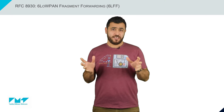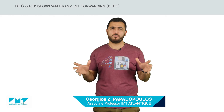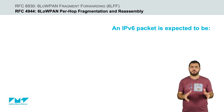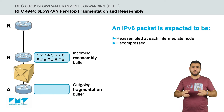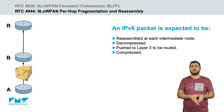Hi, I am Georgios Papadopoulos and welcome to this video on 6LoWPAN Fragment Forwarding. So far, you have seen the original 6LoWPAN per-hop Fragmentation and Reassembly Mechanism, defined in RFC 4944, where an IPv6 packet is expected to be reassembled at each intermediate node, decompressed, pushed to layer 3 and routed, and then compressed and fragmented again.